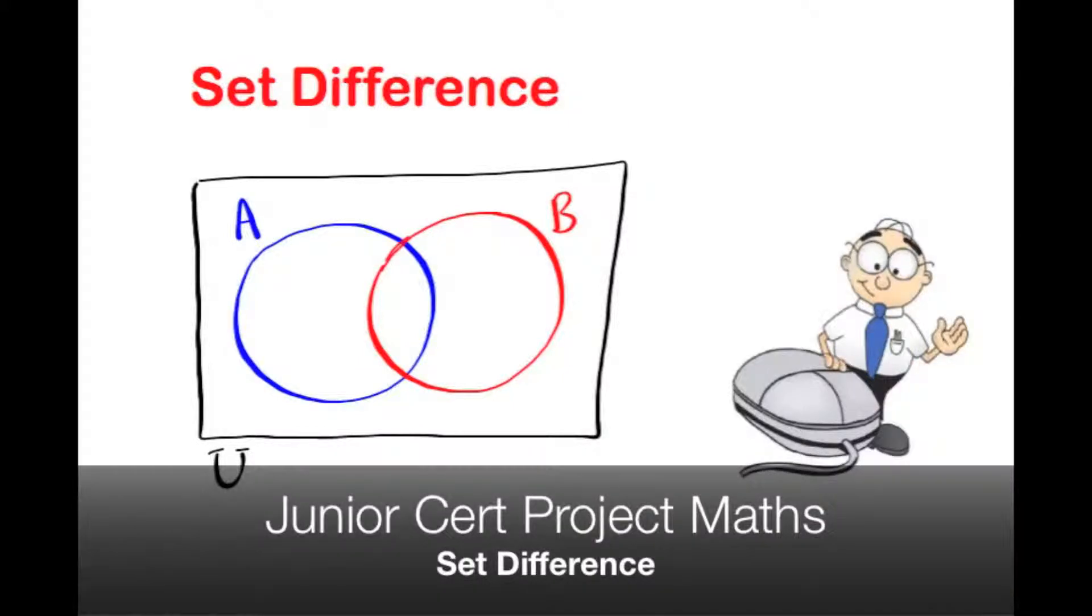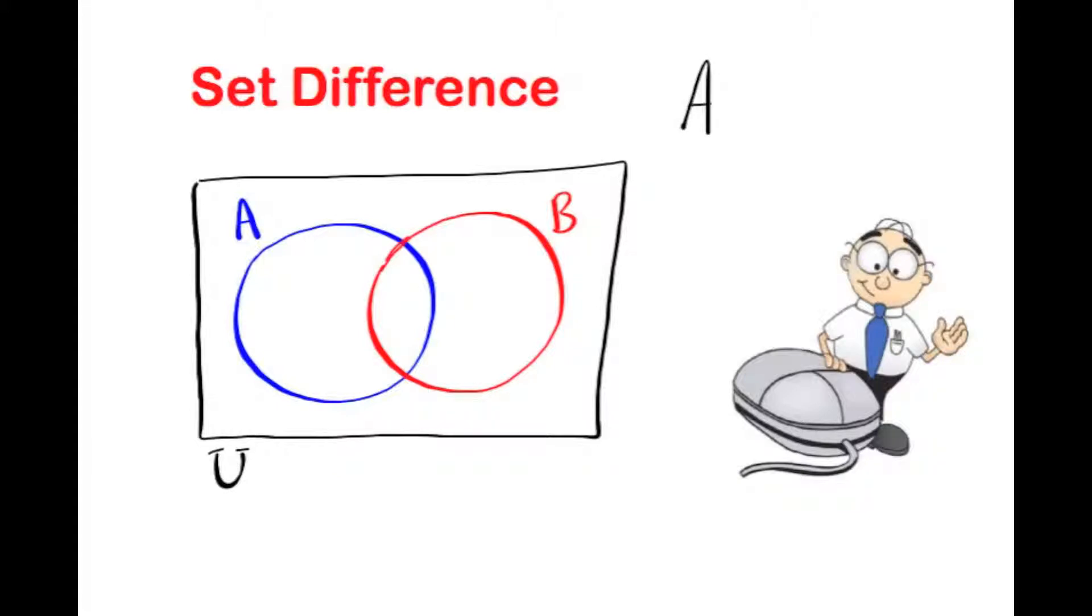This three minute video aims to explain what set difference is and then to look at two examples based on the Junior Cert Project Maths course. The terminology for set difference is written like this: A backward slash B. That means A not B. This means the parts of A that are not in B as shaded in.